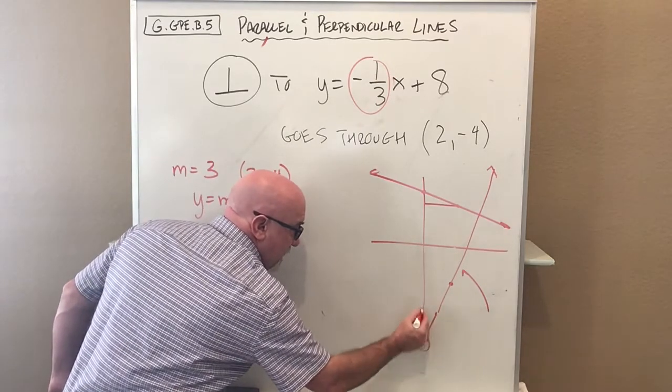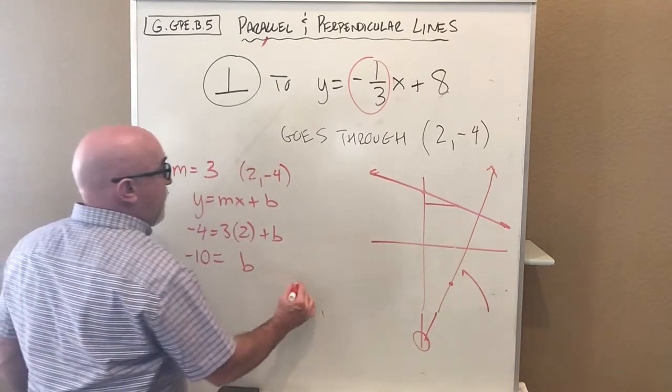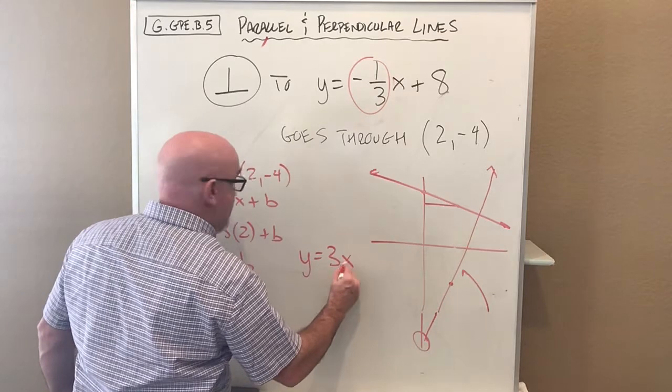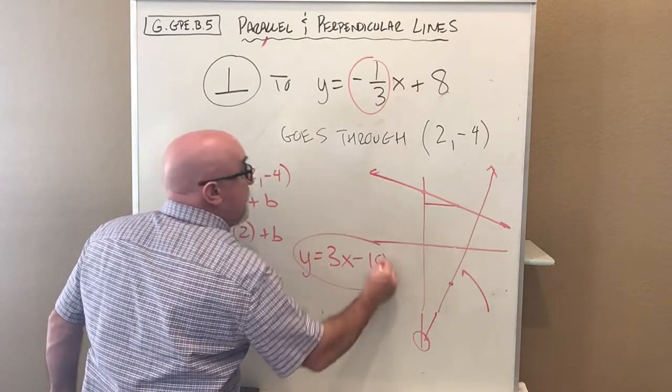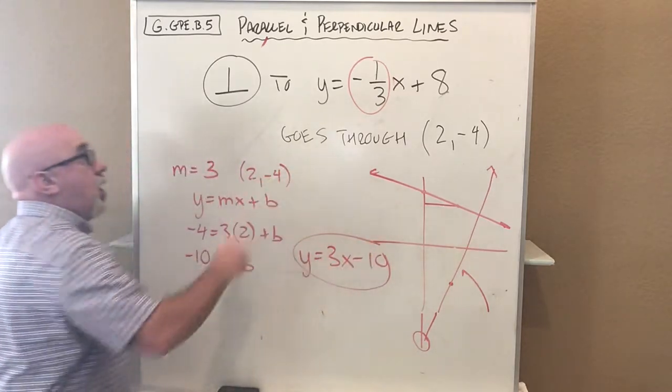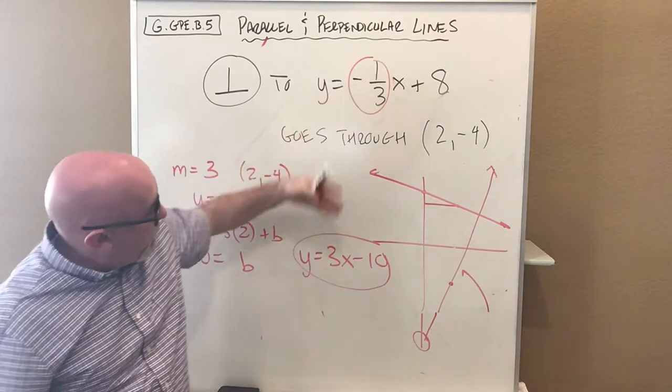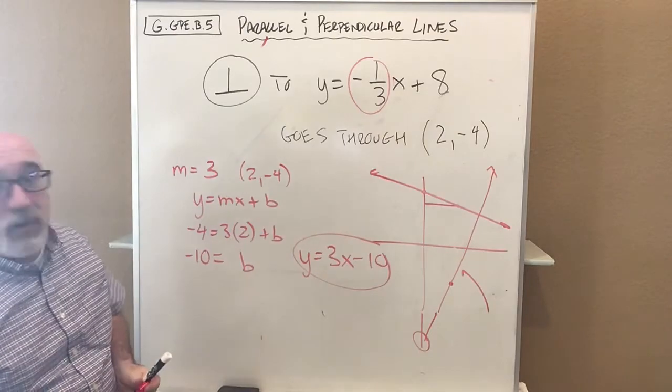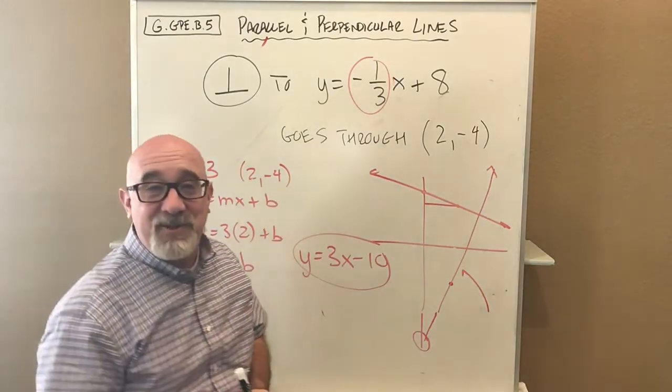This is on its way down to hit negative 10 here. So our answer would be y=3x-10. These two are negative reciprocals, so we are perpendicular to this. And we go through that exact point. This is how we do this.